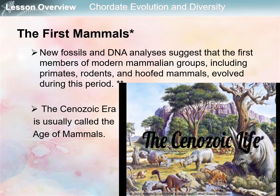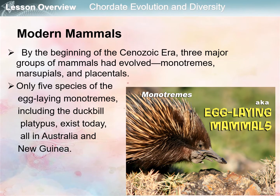After the great dinosaur extinction, mammals diversified, increased in size, and occupied many niches. This period is the Cenozoic era, usually called the Age of Mammals.